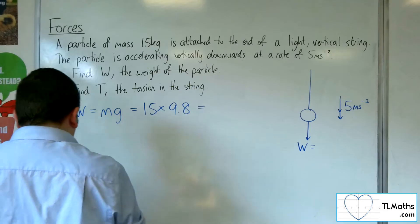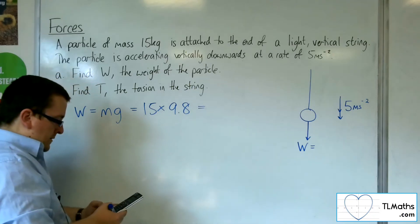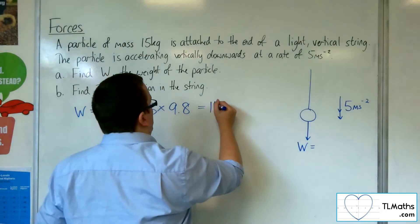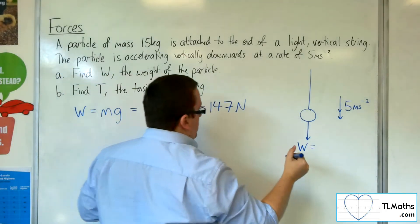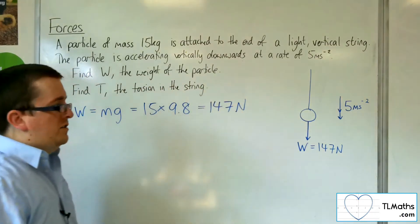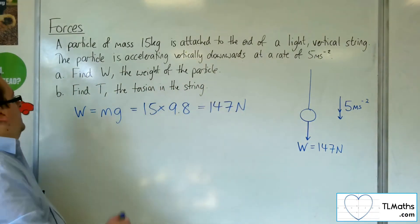15 times 9.8 is 147. So 147 newtons is the weight of the particle. That's part A.